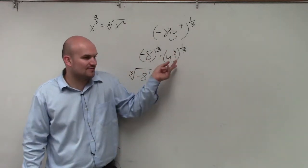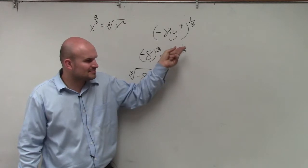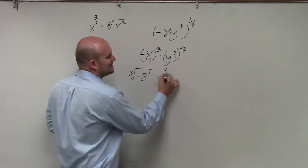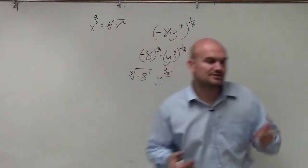Numerator times numerator, denominator times denominator. So therefore, that becomes y to the 9 thirds, which we'll be able to simplify here in just a second.